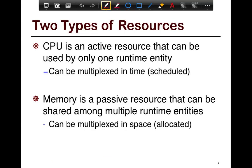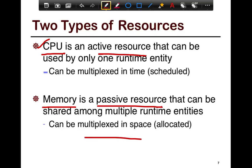There are two types of resources in general. CPU is an active resource that can be used only by one runtime entity and can be multiplexed in time. Memory can be thought of as a passive resource — it's capacity-based, like a bag with a certain number of units, shared amongst multiple runtime entities at the same time. So it's multiplexed in space.